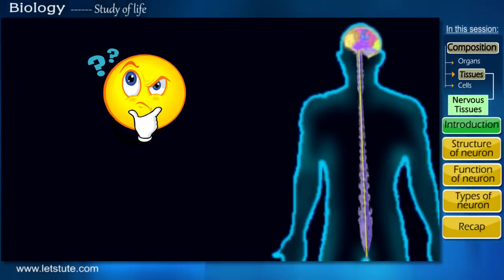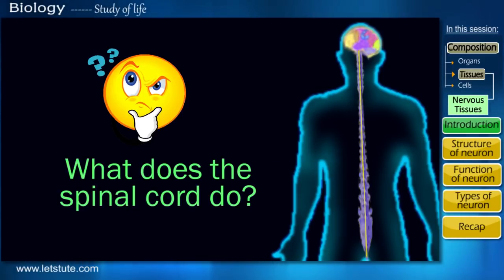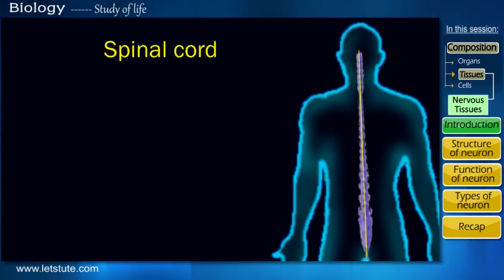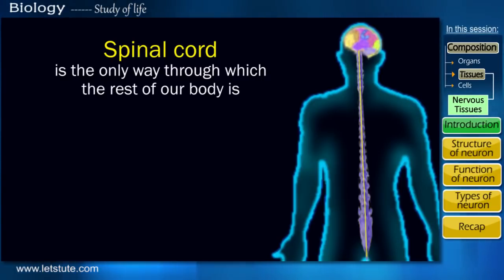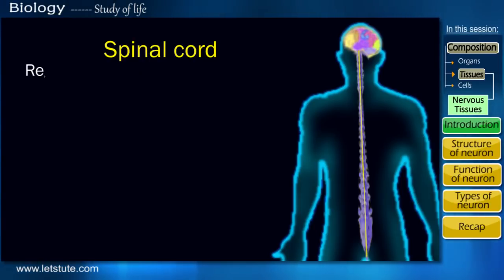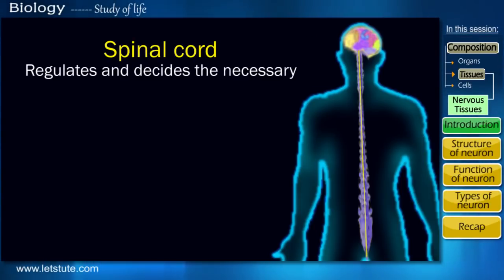So, are you wondering, if the brain does all this, then what does the spinal cord do? Well, the spinal cord is the only way through which the rest of our body is connected to our brain, and hence acts as a pathway by which it can regulate and decide the necessary actions to be carried out.